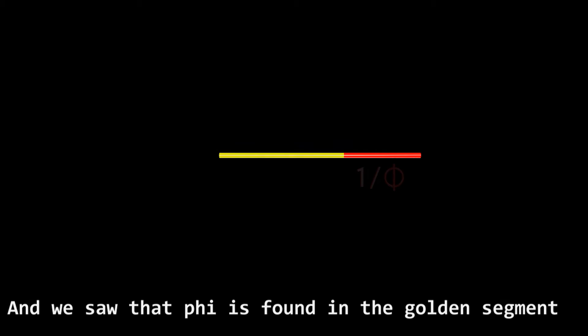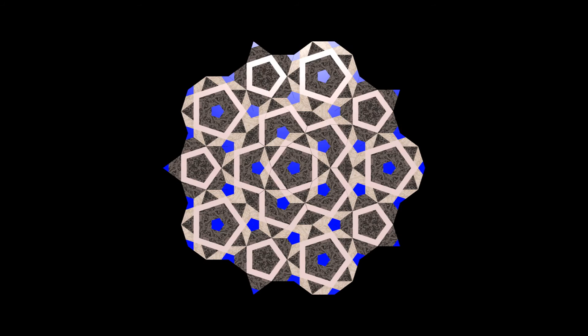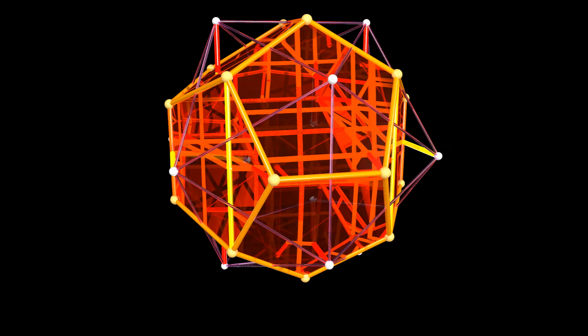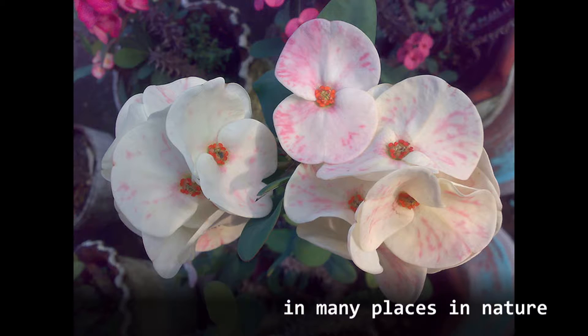And we also saw that phi is found in the Golden Segment. With that segment, we can build many geometrical figures. And we saw that phi can also be found in many places in nature.